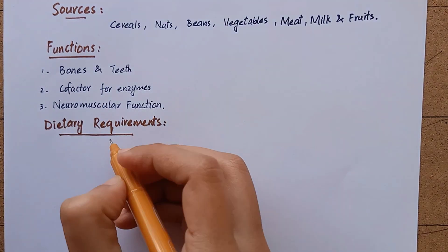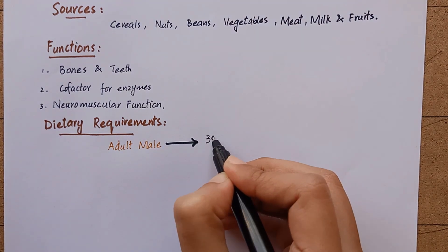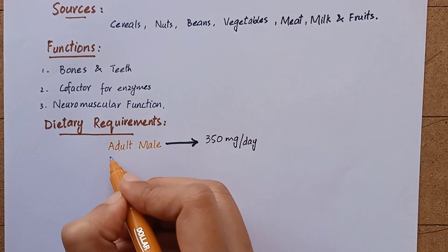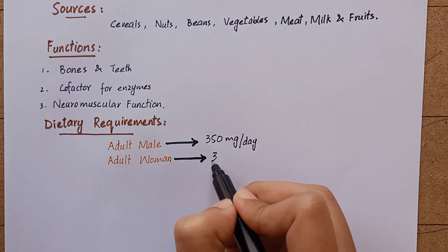The dietary requirements of magnesium in an adult male is 350 milligrams per day, and in an adult woman it is 300 milligrams per day.